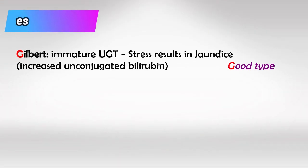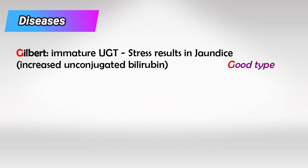Now let's talk about the diseases you'll need to know for your Step 1 exam. The pathophysiology behind Gilbert syndrome is the immaturity of UGT. The UGT enzyme, which conjugates bilirubin, is present inside the liver but is immature, so it works but slower than normal. These patients will be largely asymptomatic until they exercise or undergo stress, which overwhelms the UGT enzyme and increases unconjugated bilirubin. The classic Step 1 scenario is somebody who went hiking for two days and came back with jaundice. Remember that Gilbert is the good type.